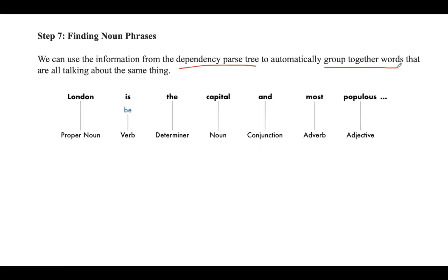If you take the same sentence — 'London is the capital and most popular' and so on — here you can see the parts-of-speech tags assigned to every word. Now we need to group the words. We have treated every word in our sentence as a separate entity till now, but sometimes it makes more sense to group words together that represent a single idea.